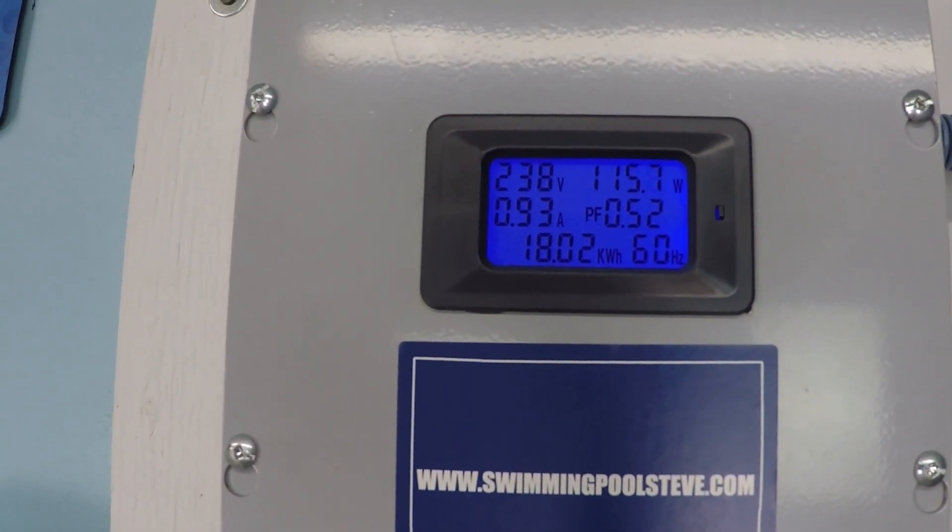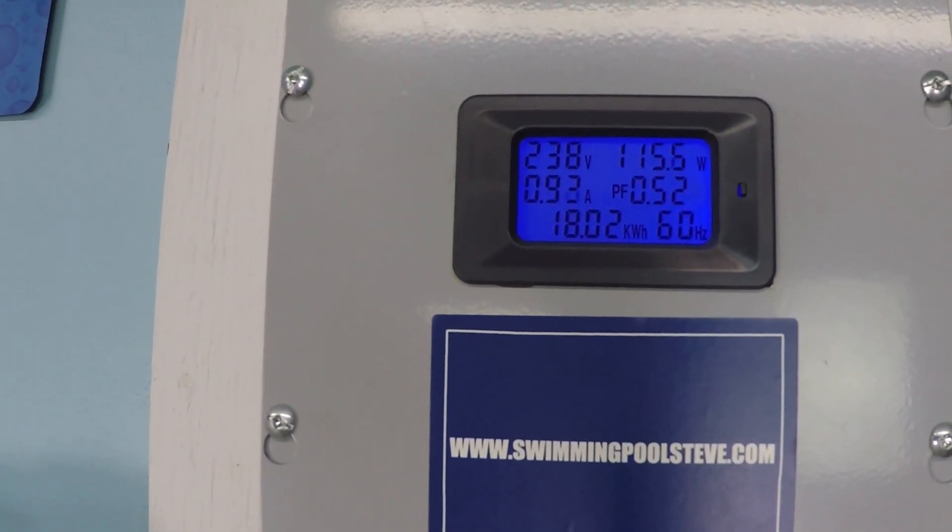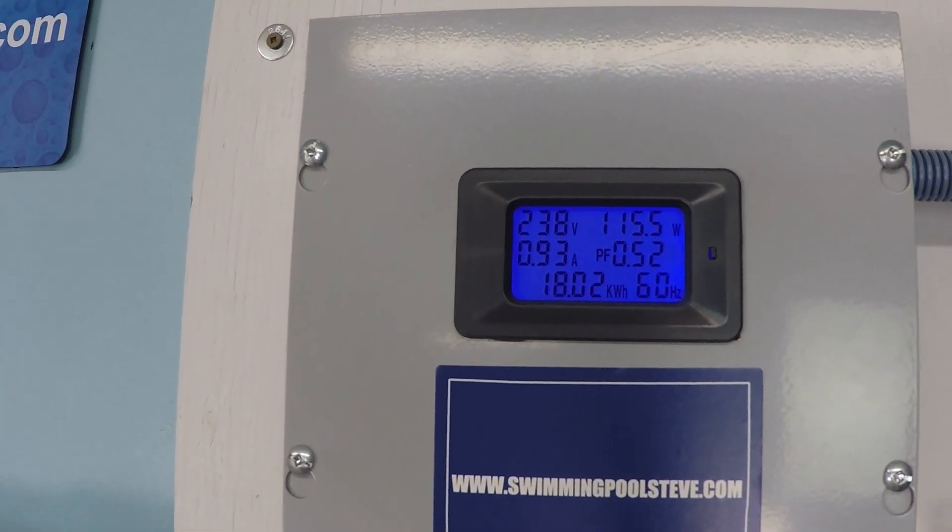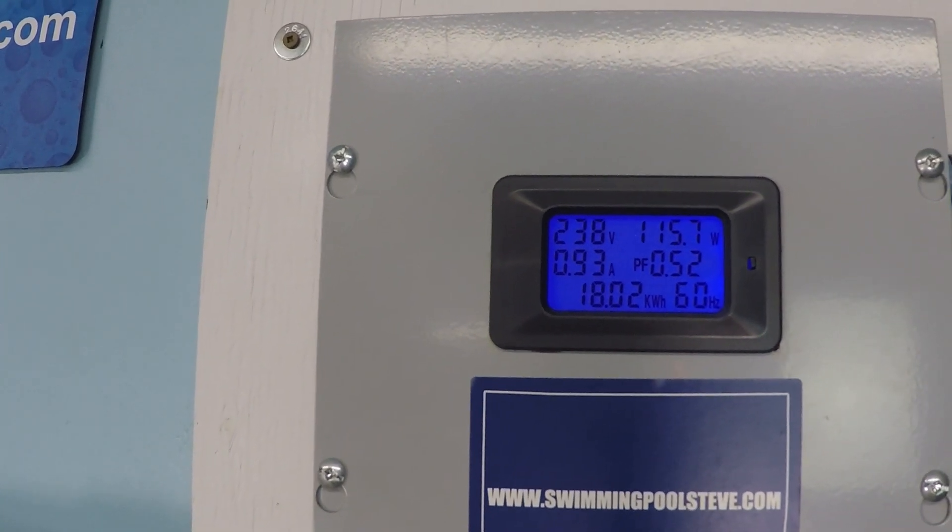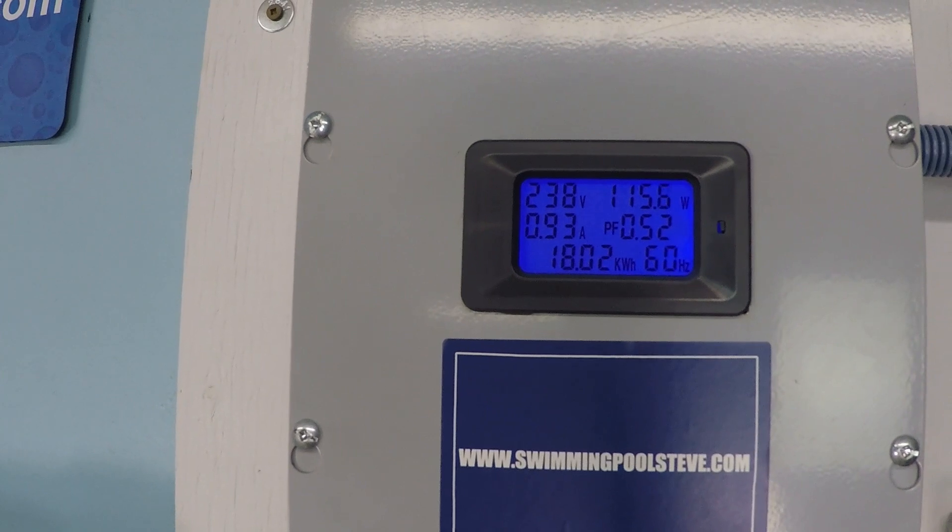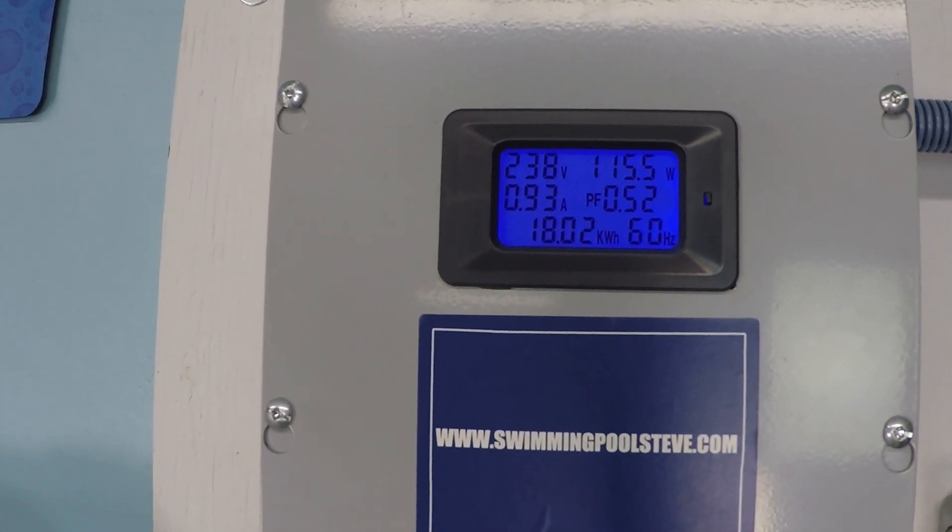And again, that's the advantage of the variable speed pump here, and that's a common thing that you'll hear people say about them when in actuality it's not true. It doesn't take that much RPM to generate chlorine with a salt system, and it doesn't consume very much power. If you found this information helpful, please be sure to like this video and subscribe to my YouTube channel. You can check out my website, swimmingpoolsteve.com.